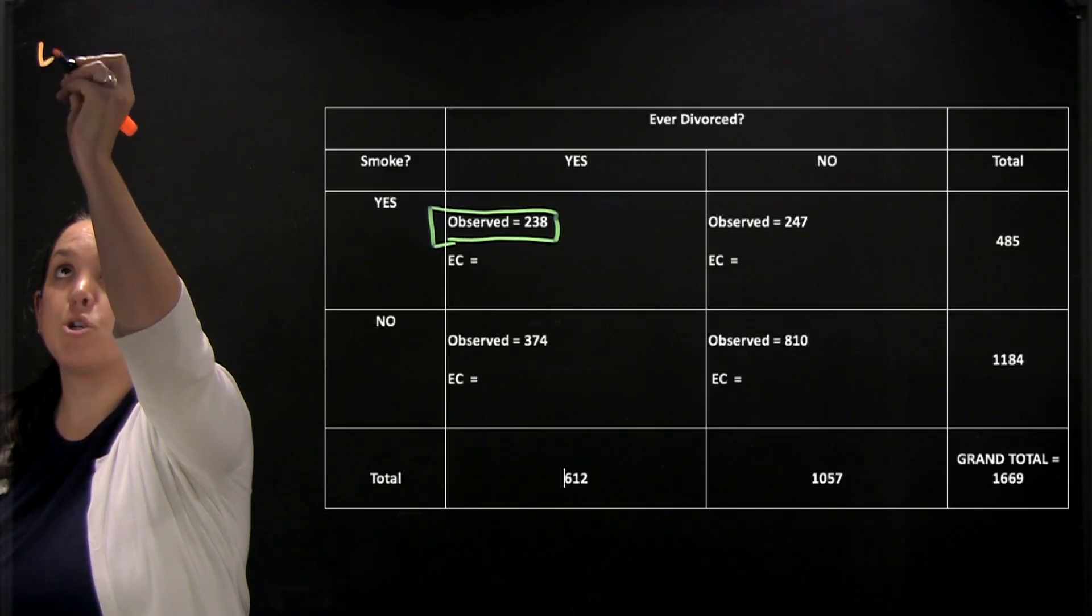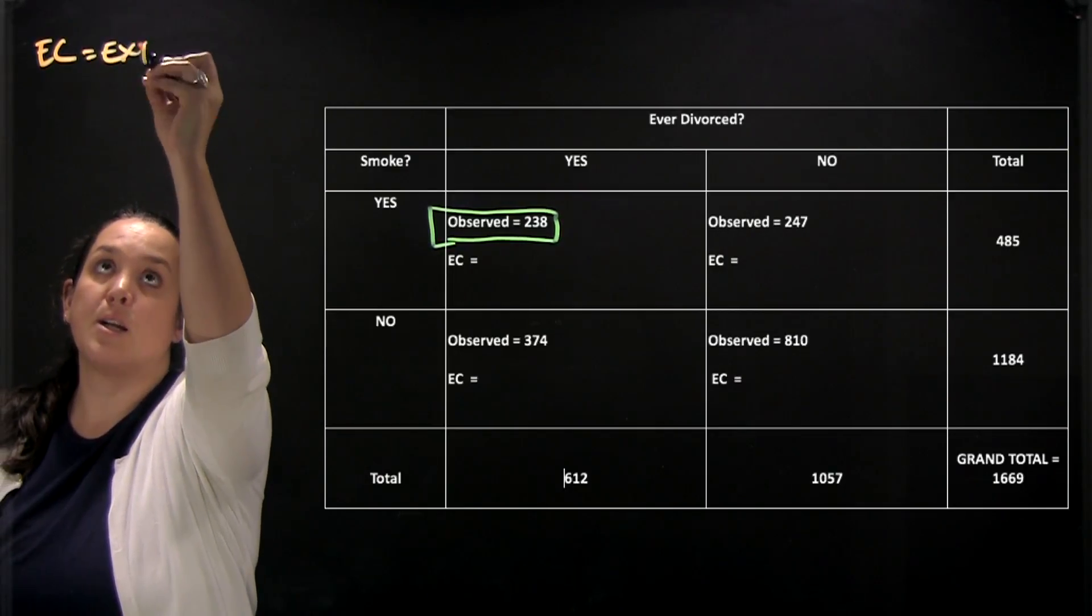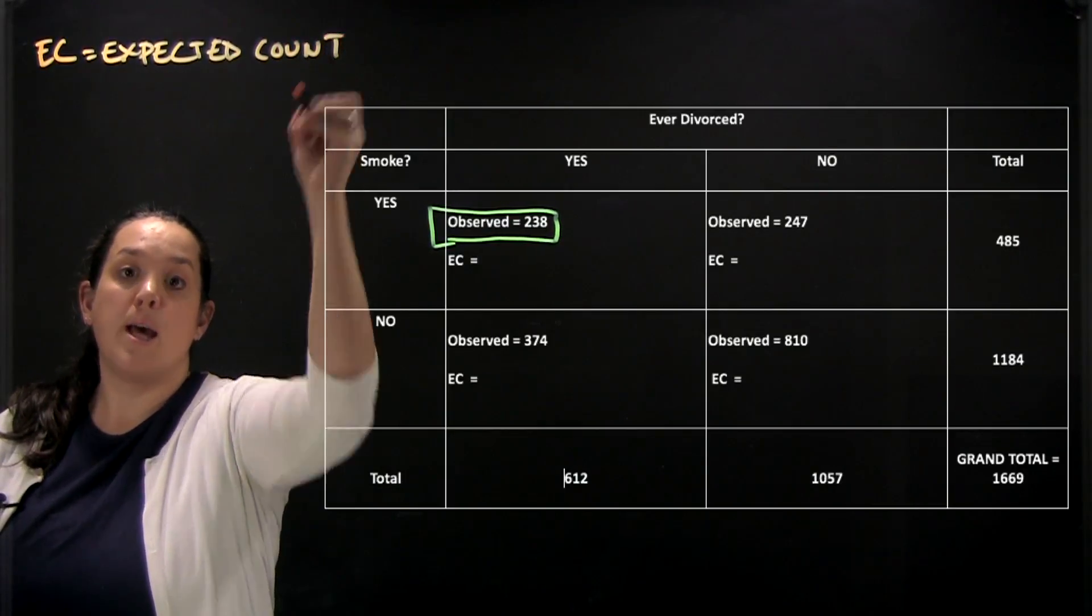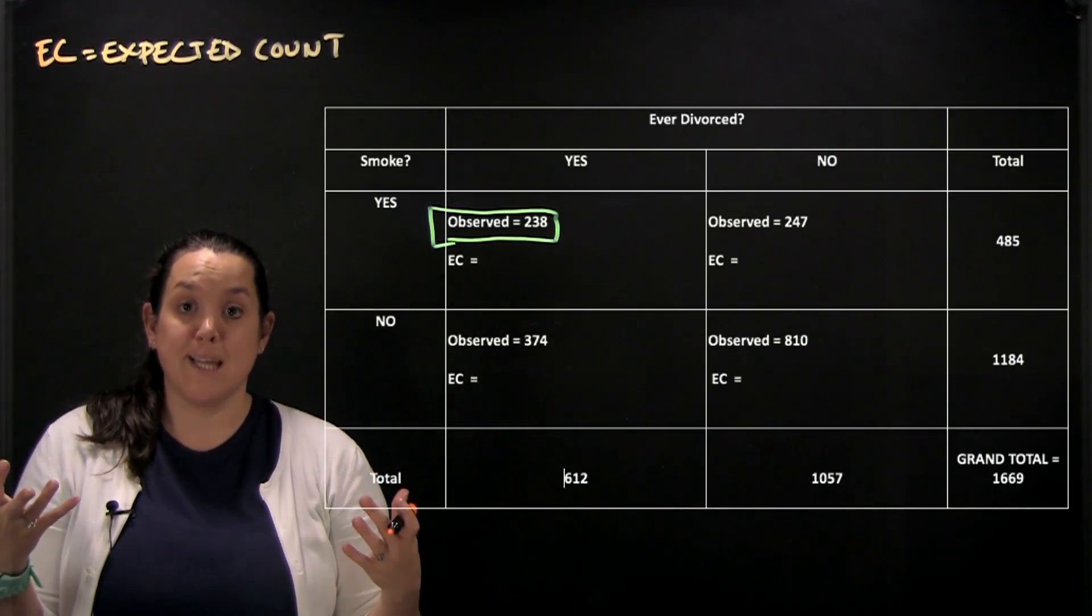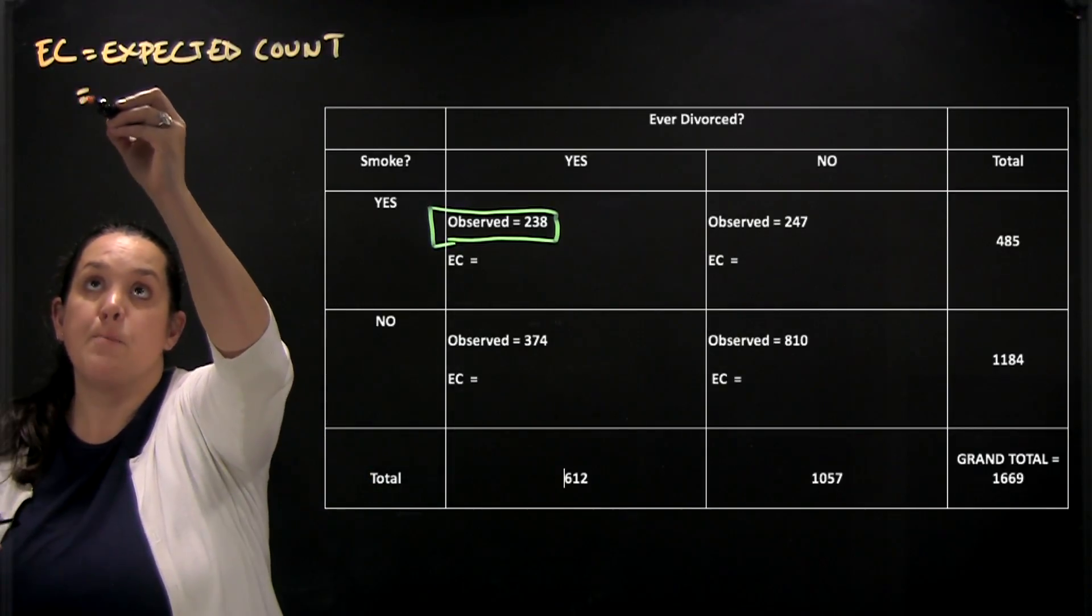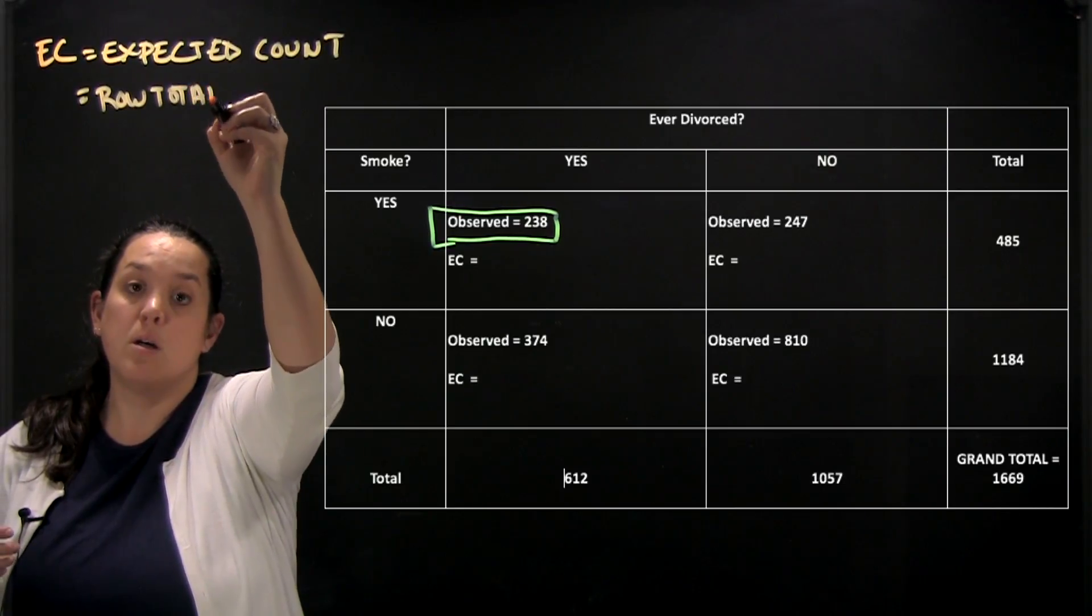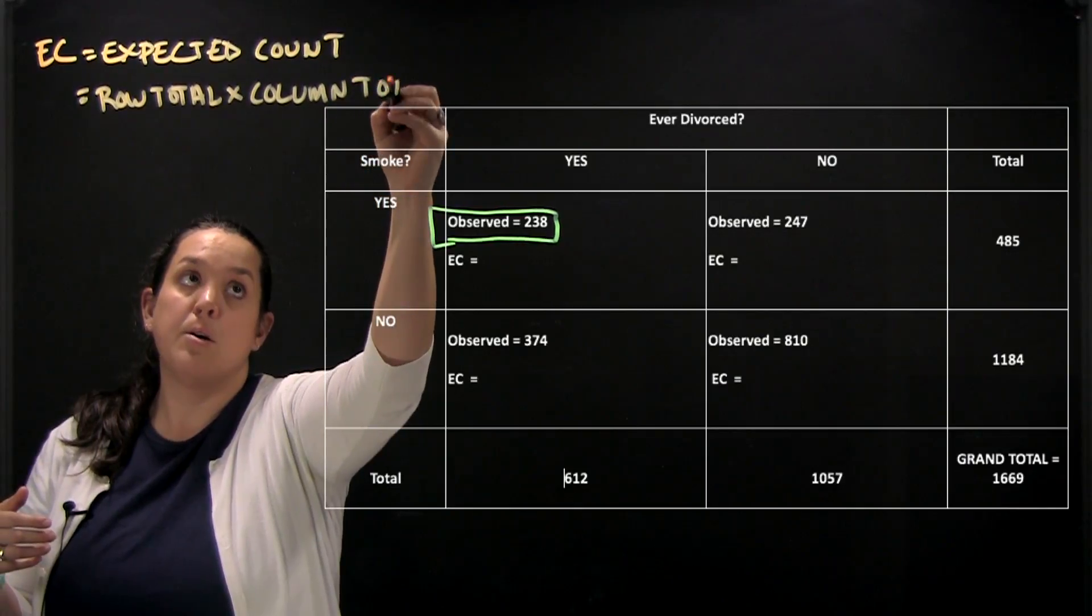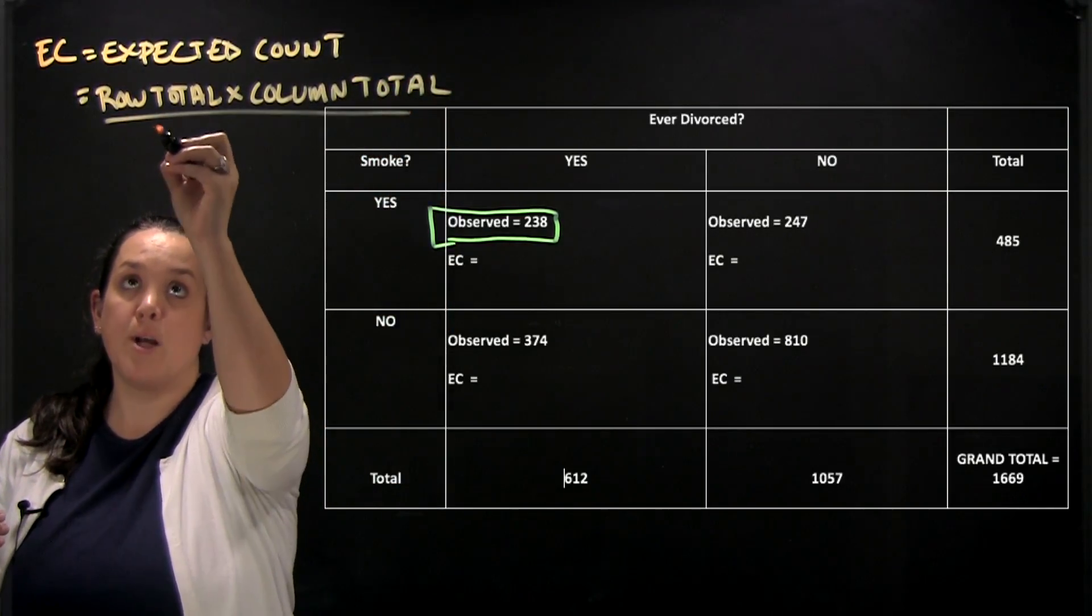So here we are shown EC and that's representing an expected count. An expected count again measures what you would expect to see if the two variables were not related. And to calculate that it's row total times column total divided by the grand total.